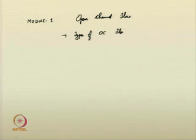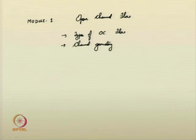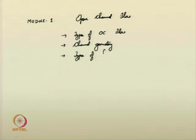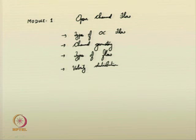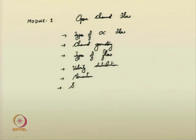In Module 1, channel geometry was also suggested, including how to find average velocity at a cross section, velocity distribution for wide and narrow rivers, the momentum quantity, and the terminology called specific force.